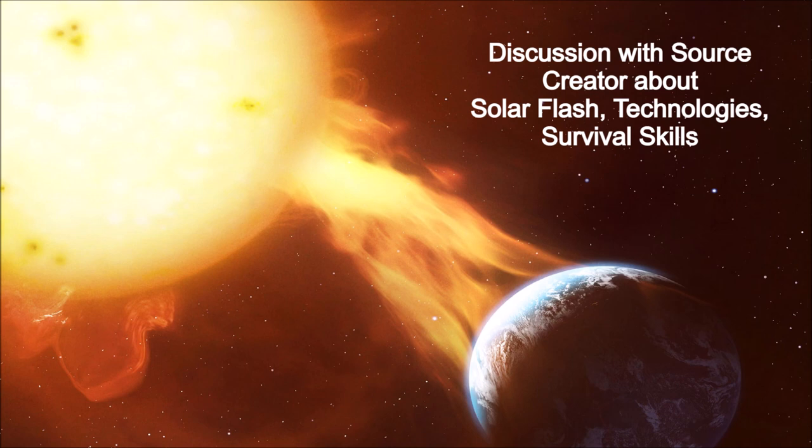But what I'm seeing is that if the solar flash happens now it will actually fry people's bodies potentially and cause destruction on the planet. So it's not supposed to happen in 2024. Why is that?